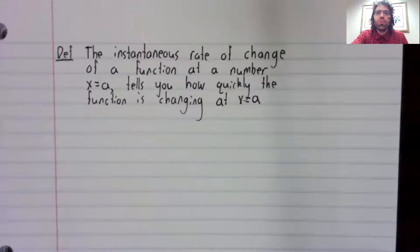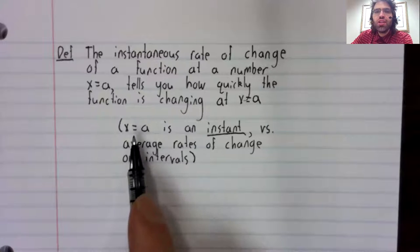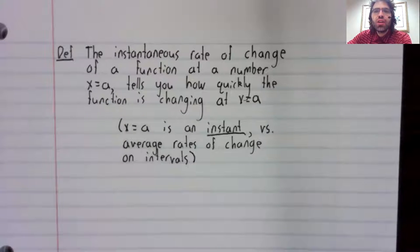And the name comes from the fact that x equals a represents a single instant versus average rates of change, which are defined on intervals with an infinite number of points in them.